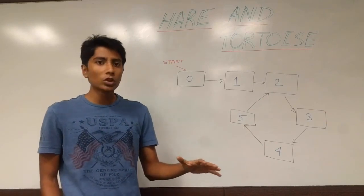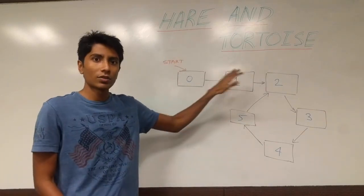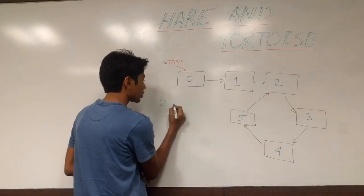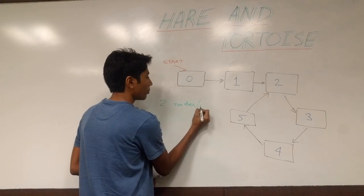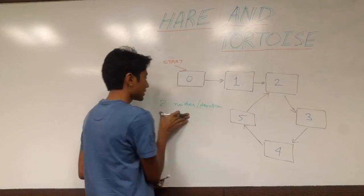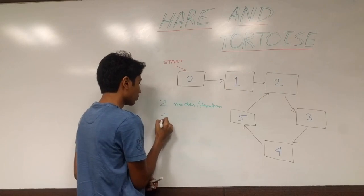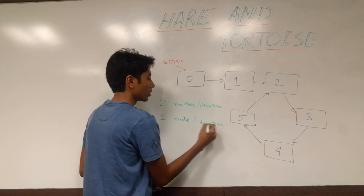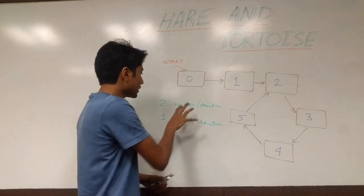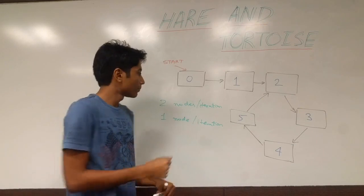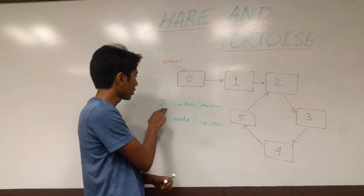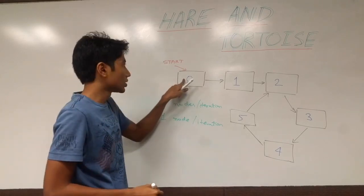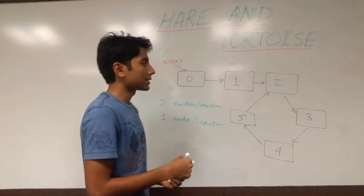The very famous solution for this is the hare and tortoise algorithm. The hare moves two nodes per iteration — this is the fast pointer — and the tortoise moves one node per iteration. These two are moving at different speeds. Every iteration the hare advances by two and the tortoise by one, and both of them start at the starting node, node zero, and they will meet at some given point of time.